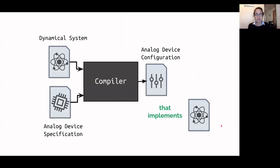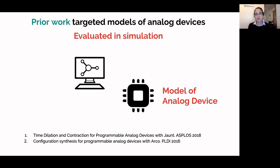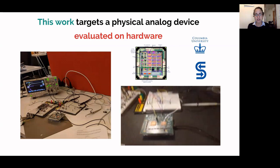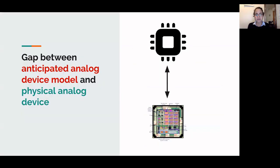The compilation problem is: given a dynamical system to implement on the analog device, and given a specification of the analog device describing all blocks, connections, and how blocks can be programmed, can we synthesize a configuration that, when written to the hardware, configures it so the physics of the hardware is analogous to the dynamical system dynamics? Prior work targeted models of the analog device and was evaluated in simulation, whereas this work targets a physical device and was evaluated on actual hardware — revealing a gap between anticipated and actual physical behavior.